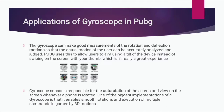Applications of gyroscope in PUBG: The gyroscope can make good measurements of rotation and deflection motions so that the actual motion of the user can be accurately analyzed and judged. PUBG uses this to allow users to aim using a tilt of the device instead of swiping on the screen with a thumb. The gyroscope sensor enables smooth rotations and execution of multiple commands in games by 3D motions.